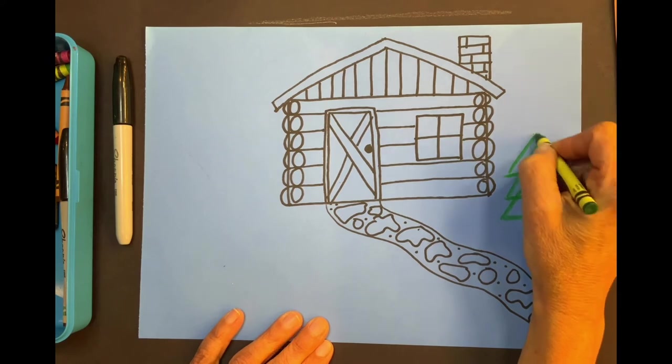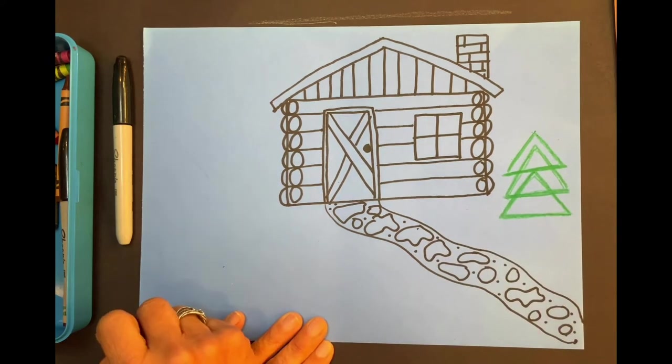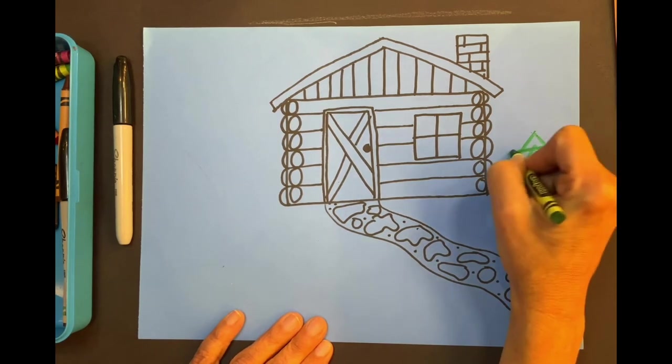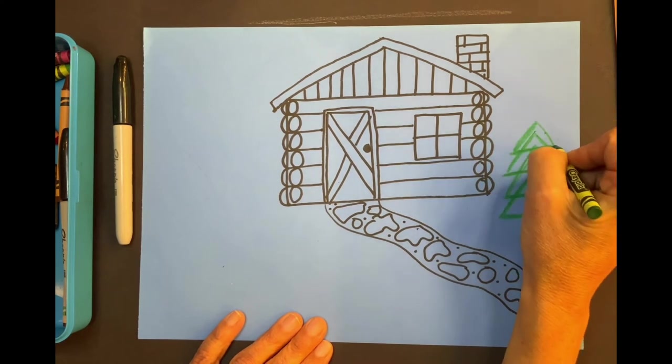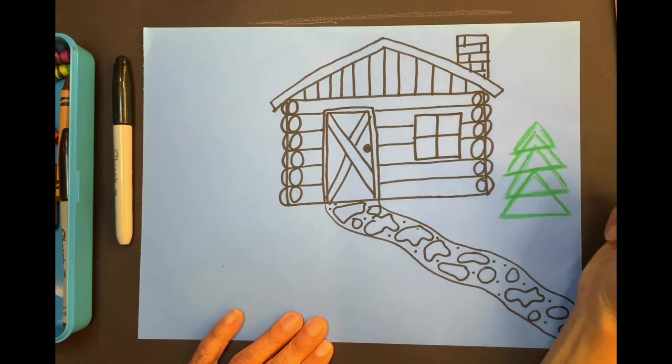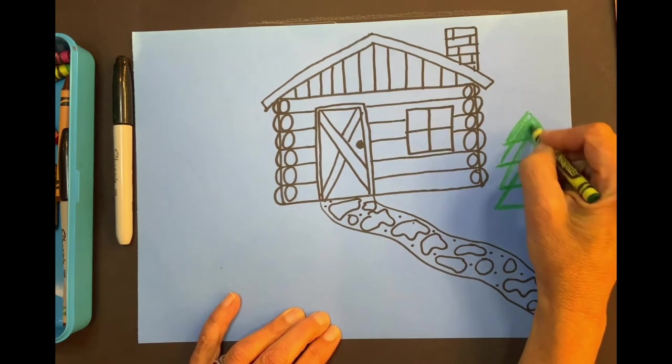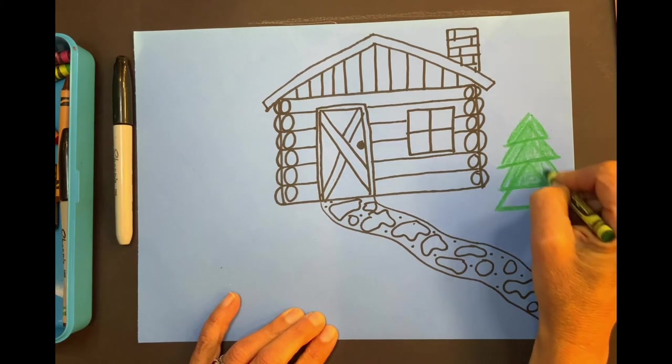And here's a third, triangle number three, sitting on top. And even get even smaller maybe, or even taller, but with a smaller triangle on top. See how many triangles you want to make and then we're going to color it all the way in. These are evergreen trees.